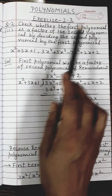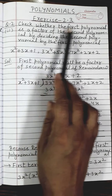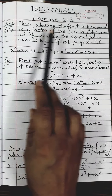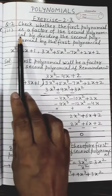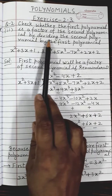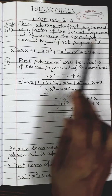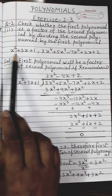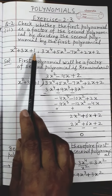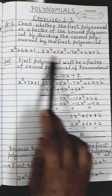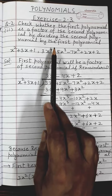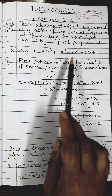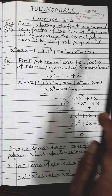Today's question is from the polynomial chapter, exercise 2.3, question number 2, second part. Check whether the first polynomial is a factor of the second polynomial by dividing the second polynomial by the first polynomial. The first polynomial is x² + 3x + 1, and the second polynomial is 3x⁴ + 5x³ - 7x² + 2x + 2.